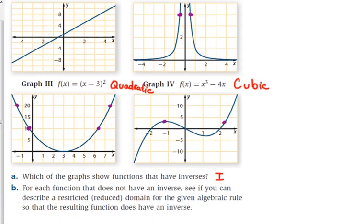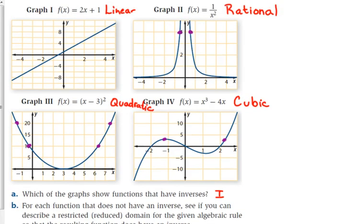Part B, though, says for each function that does not have an inverse, see if you can describe a restricted domain so that the resulting function does have an inverse. So I'm going to walk you through this one. Number 1, we're good. Let's look at number 2. There is a place where we can kind of cut this function in half, so to speak, so that we still get all the same y values, but we don't repeat them. If we restrict the domain, if we say that x is greater than or equal to 0, we're excluding the left half of the graph. This way they're not repeated. And so when we restrict it, and we're not considering the left half of the graph, then we're good. This inverse would be a function for number 2.